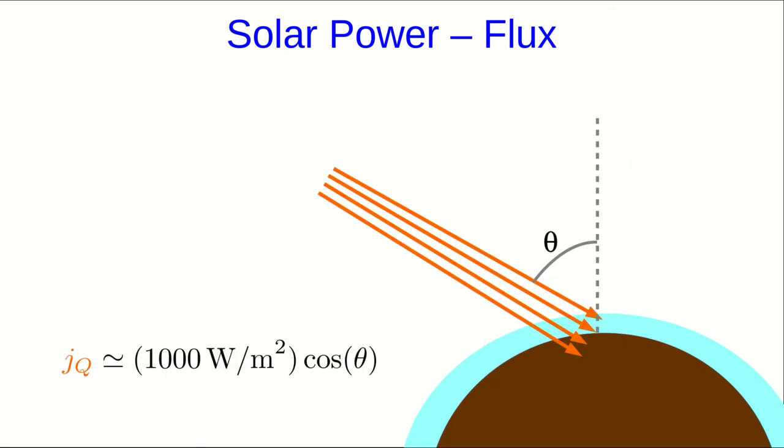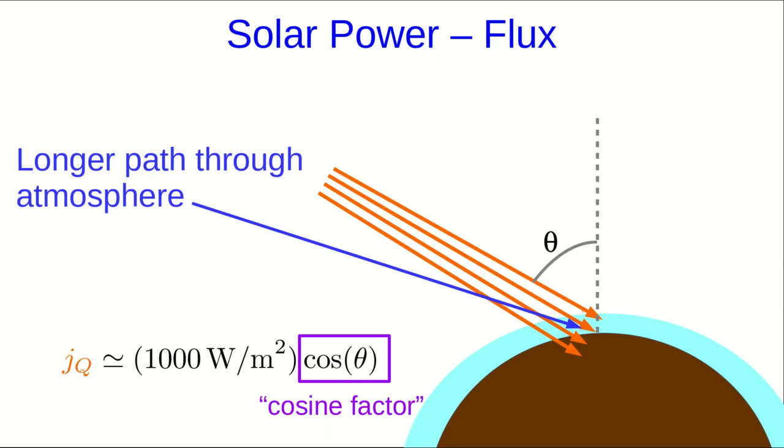This is reduced if the sun is not coming from straight overhead. First of all, if the panels or other collectors are not able to be steered to point directly into the sun, then there is what is called a cosine factor, which gets introduced. But more importantly, because it affects even steerable collectors, if the sun is not directly overhead, then the sunlight has to pass through a longer path in the atmosphere, and this reduces the flux density overall.